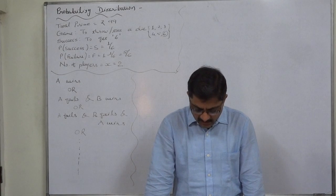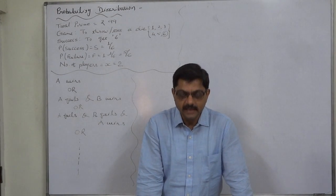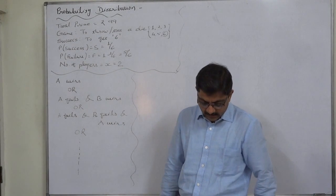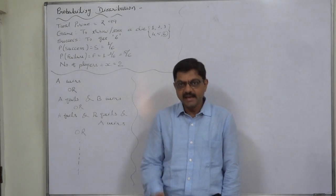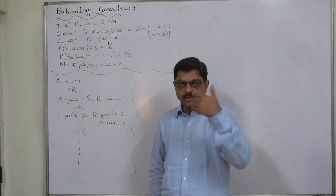A and B play a game for a prize of Rs. 99. The prize is to be won by a player who first throws six with one die. That means A and B turn by turn throw a cubical die.